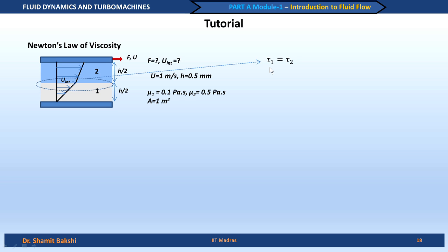Applying Newton's law of viscosity, we write: mu_1 · (du/dy)|_1 = mu_2 · (du/dy)|_2. From this expression, we can also see why the gradient discontinuity exists — the slope of the velocity profile in fluid 1 must differ from that in fluid 2 to maintain continuity of shear stress. The gradients can only be equal if mu_1 equals mu_2. This is the most important point: shear stress continuity.